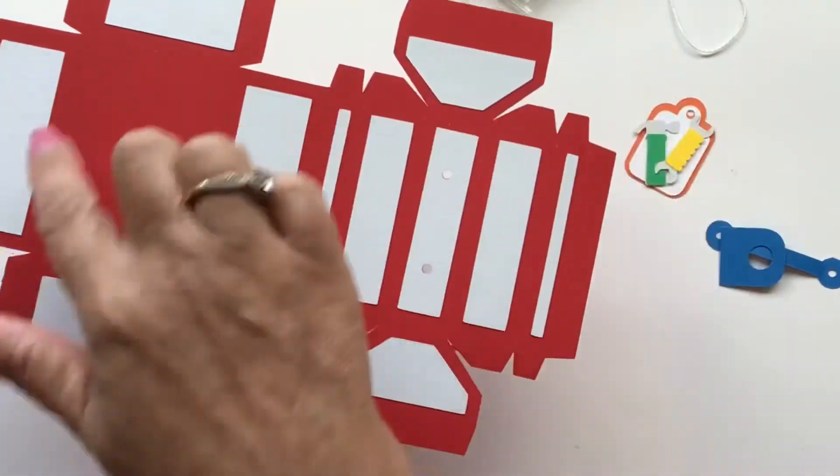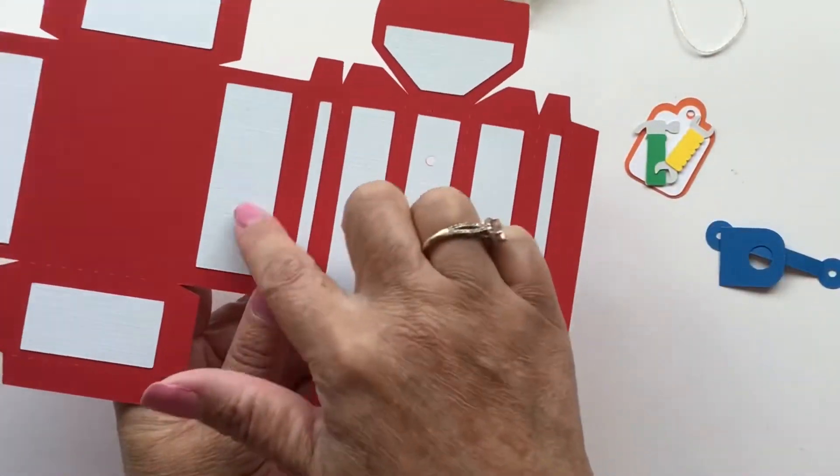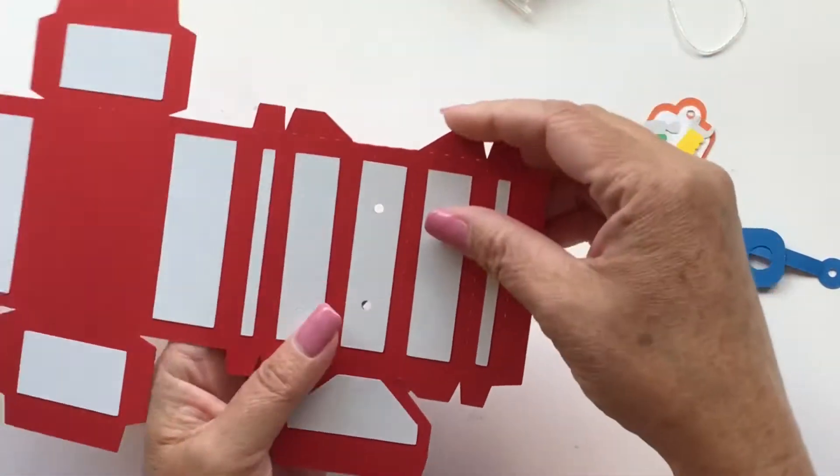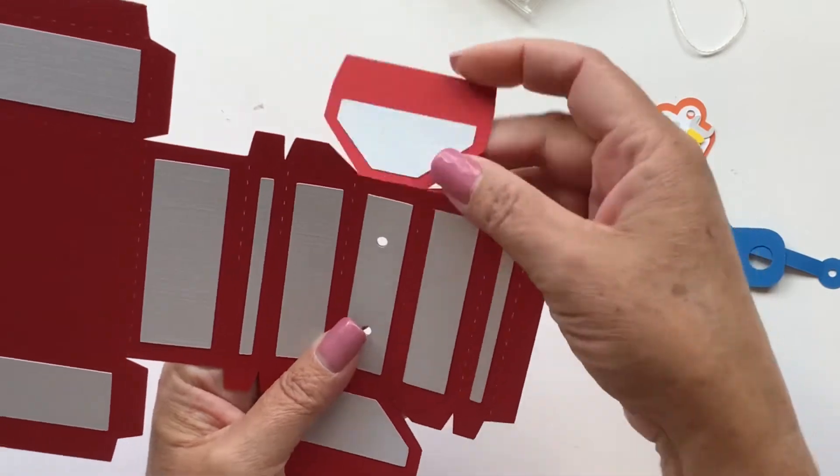So to get started, all we're gonna do is I'm gonna take my tool chest, and after I've glued on all my embellishment pieces, I'm gonna fold everything away from me. So there's quite a few score marks on here.